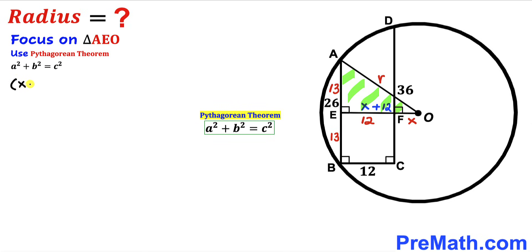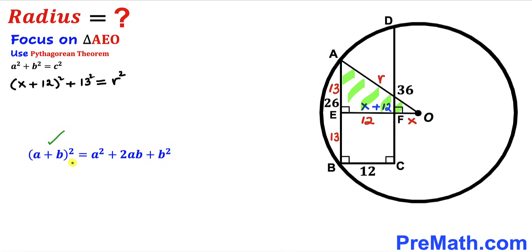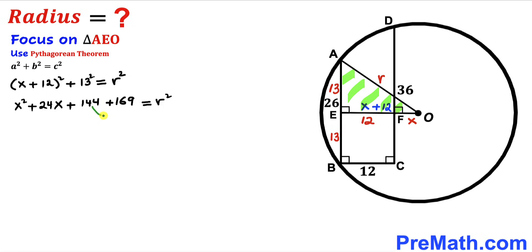Filling in the Pythagorean formula: (x + 12)² + 13² = r². Expanding using the identity (A + B)² = A² + 2AB + B², we get x² + 24x + 144, plus 169, equals r². Combining constants gives r² = x² + 24x + 313. This is Equation 1.